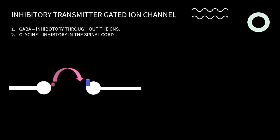When GABA comes and binds to the GABA-A receptor, it activates this ion channel. On activation, chloride enters the cell. Since chloride is anionic, the concentration of anions inside the neuron increases, the neuron hyperpolarizes, gets inactivated, and is ultimately inhibited.